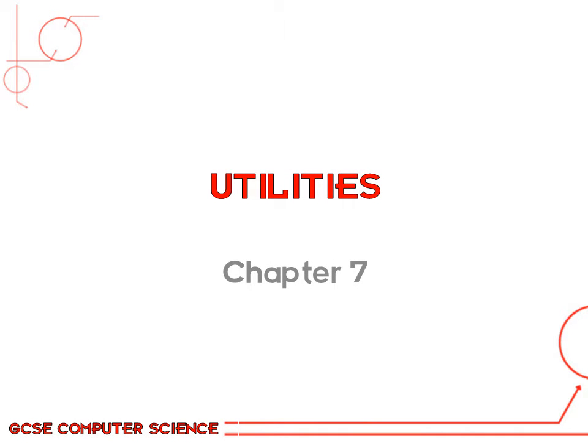We've already looked at operating systems and their main functions. In this chapter, we'll look at system software called utilities. These are useful tools usually inbuilt into an operating system that make things better and easier for you to manage.